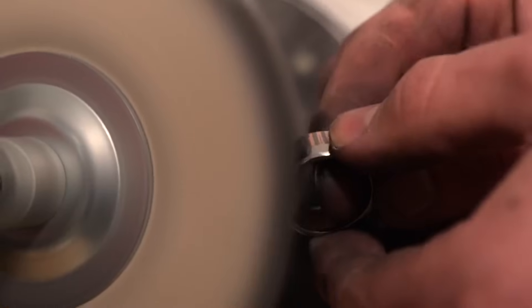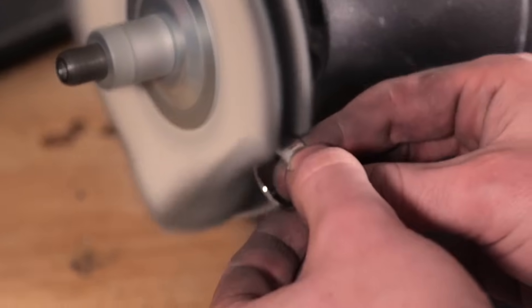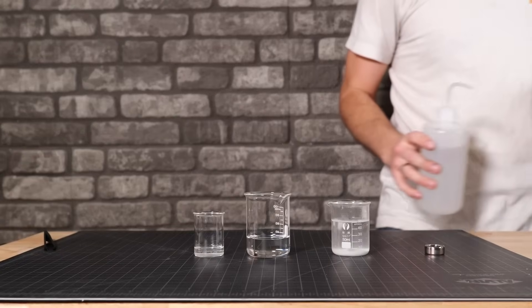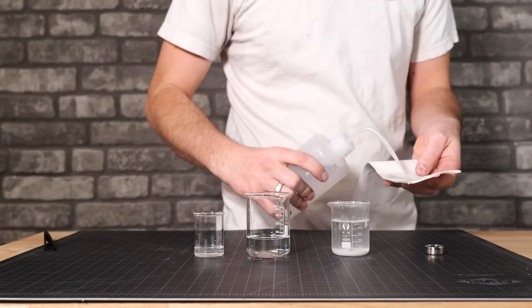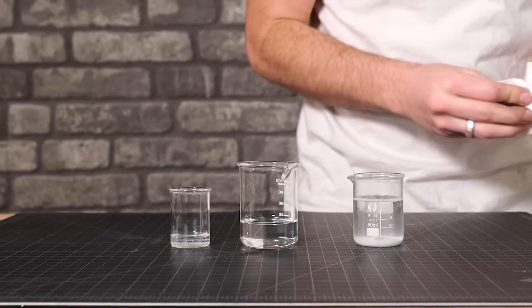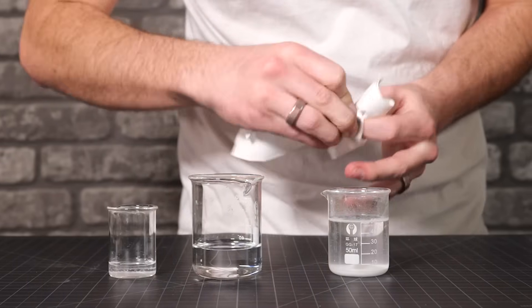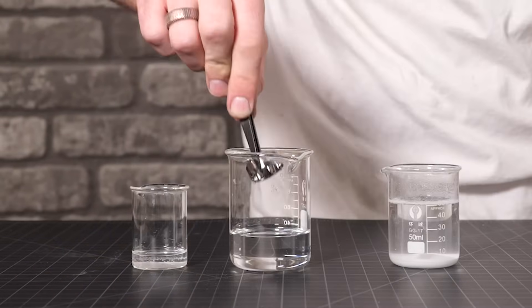All right I've got my three solutions prepared here. I've got muriatic acid in the middle. On your left that's an industrial strength hydrogen peroxide that serves as a catalyst that'll really speed up the reaction. And then on the right it's just baking soda and water. I'll use that to neutralize the acid when we're done.